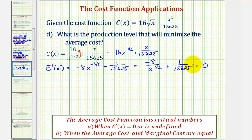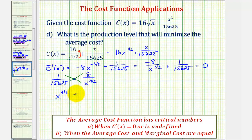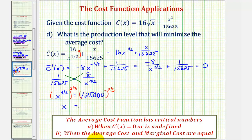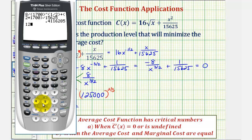Adding 8 over x to the 3/2 to both sides gives 1 over 15,625 equals 8 divided by x to the 3/2. Cross-multiplying: x to the 3/2 equals 8 times 15,625, which is 125,000. To solve for x, we raise both sides to the reciprocal power of 2/3. Multiplying the exponents gives x to the first, or just x. Evaluating 125,000 to the power of 2/3 on the calculator gives us 2,500. This is the only feasible critical number, but we should verify it minimizes the function.